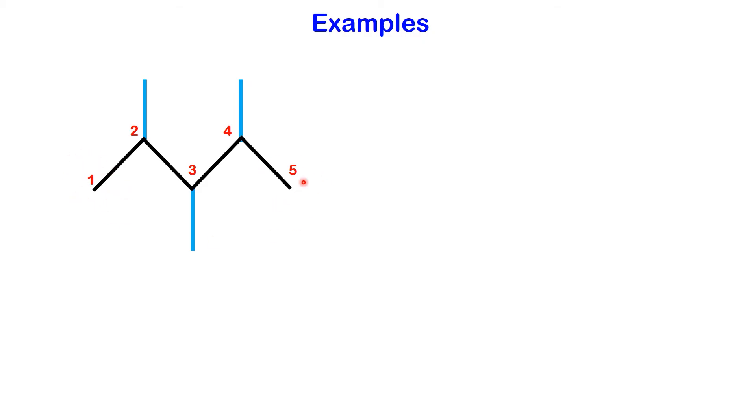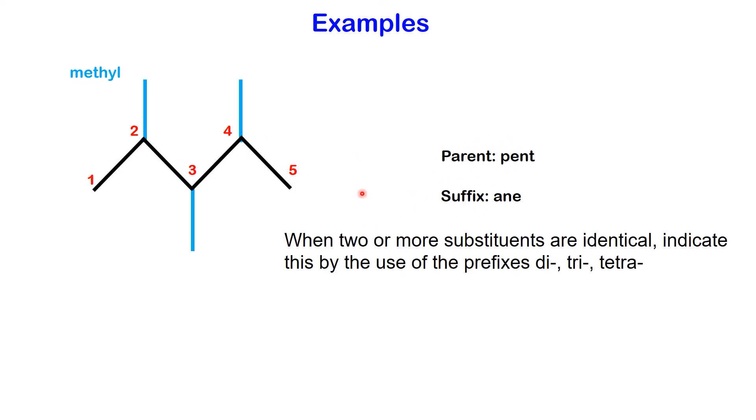Proceed to name the groups attached to the main chain. Here we encounter three methyl groups: the first on carbon two, the second on carbon three, and the third on carbon four.